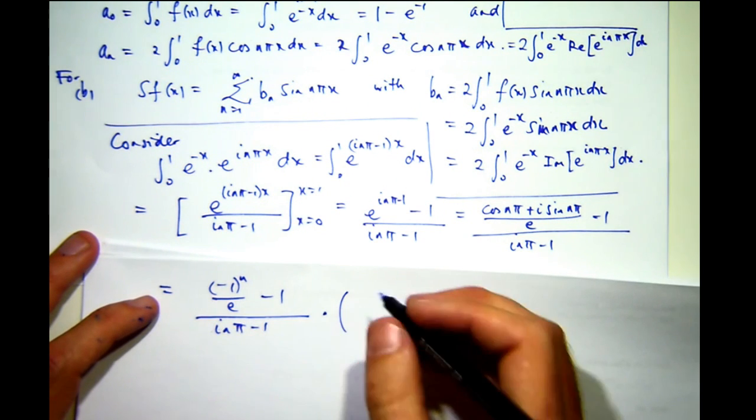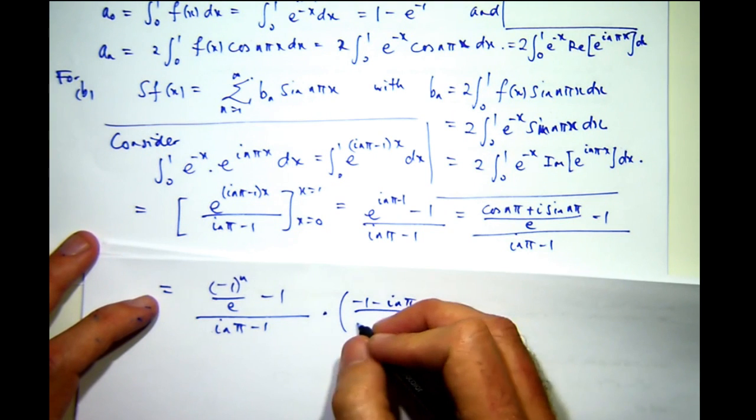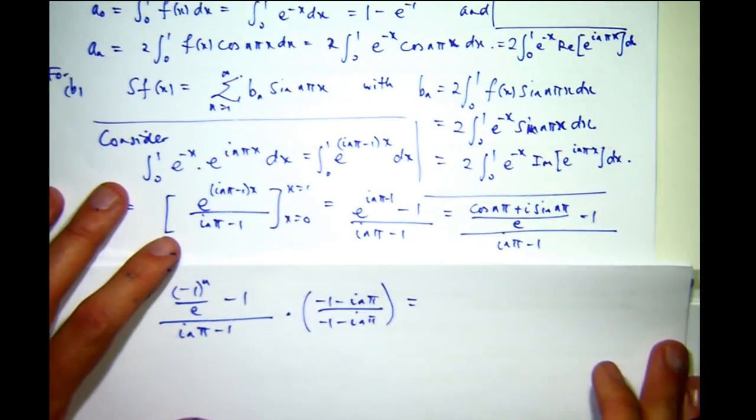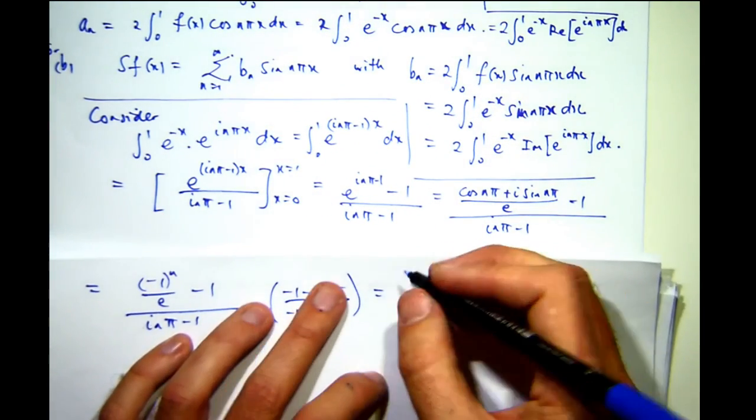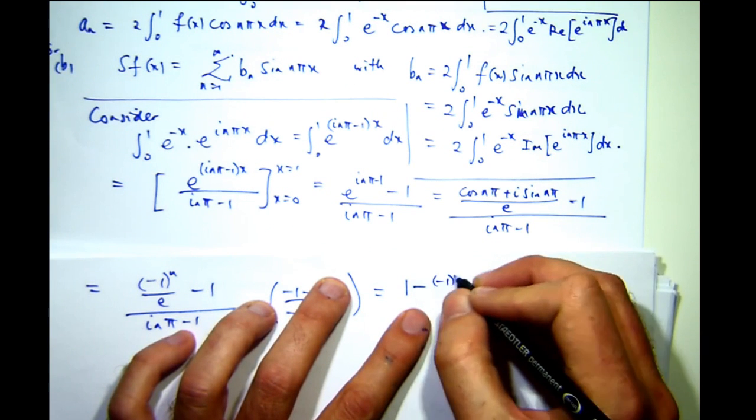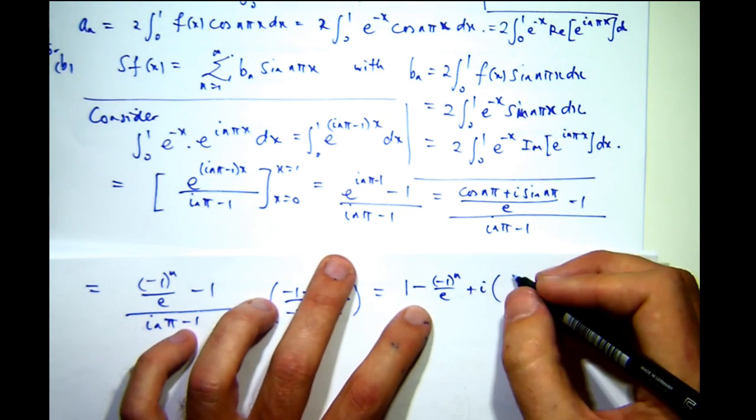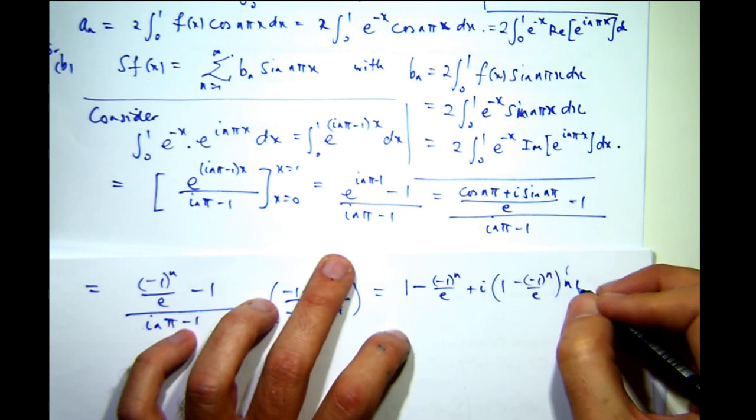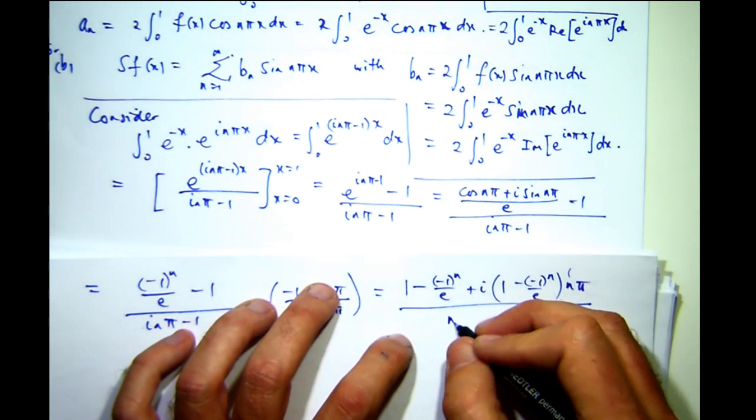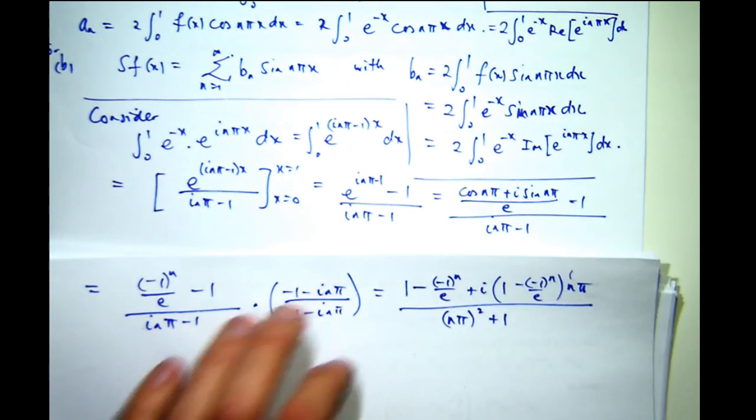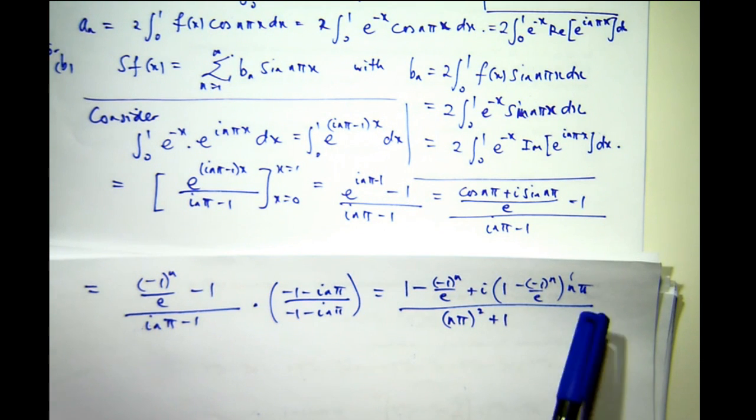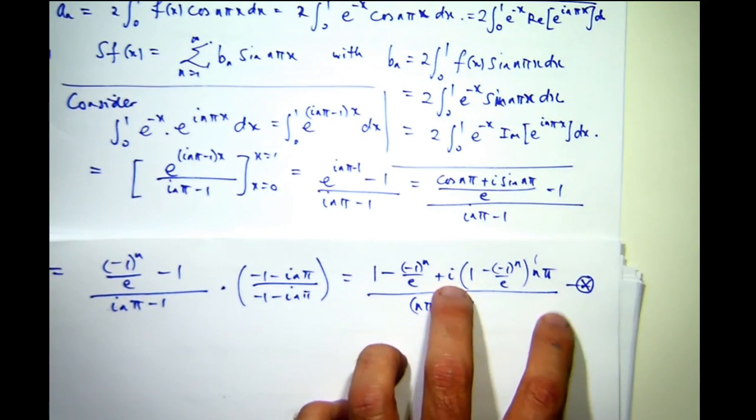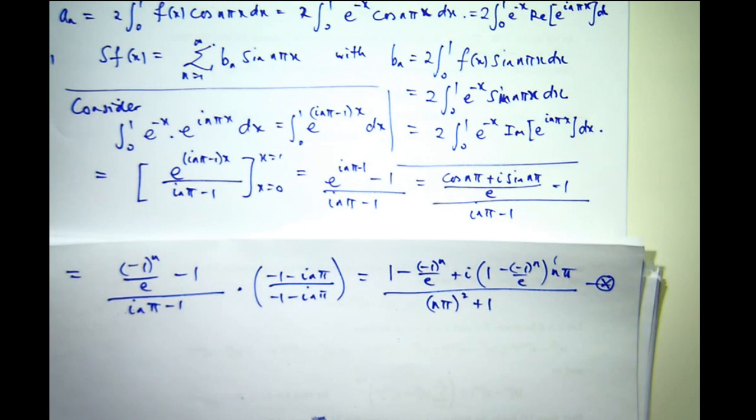For that, I'm going to multiply by the conjugate of what's on the bottom divided by itself. So, if I expand this out, remembering that i squared equals negative 1, I'll get something like the following. Now, I'm getting somewhere. I just need to take the real and imaginary parts of these things, which is easy to do in its current form. So, let's call this star. And let's look at the real part of star and the imaginary part of star.